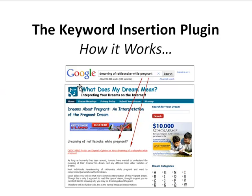When a visitor comes from a search engine, whatever keyword they typed will be dynamically inserted. In our example, the post is titled 'Dreams About Pregnant: An Interpretation of the Pregnant Dream,' but it dynamically inserted the actual keyword 'dreaming of a rattlesnake while pregnant.' The affiliate link reads 'click for an expert's opinion on dreaming of a rattlesnake while pregnant,' and that phrase also appears within the post content. This is extremely powerful — your page now contains exactly the keyword phrase the person typed into Google, making that affiliate link far more likely to get clicked than generic default text.